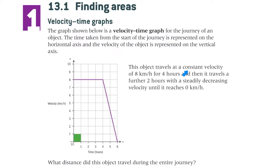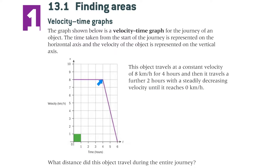This object travels at a constant velocity of 8 km per hour for 4 hours. The velocity is not changing because that's measured on the vertical axis, for 4 hours. And then it travels a further 2 hours with a steadily decreasing velocity until it reaches 0 km per hour — 2 more hours until it gets to 0.